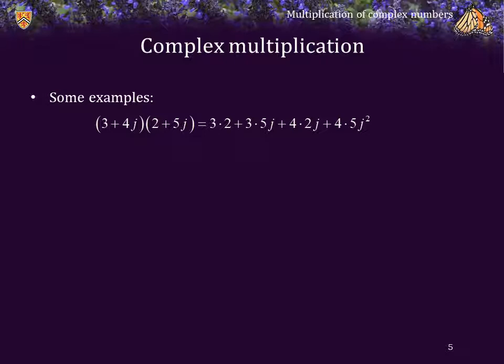Let's look at some examples. Here's 3 plus 4j times 2 plus 5j. Again: first, outside, inside, and last. Having calculated all of these, we replace j squared with negative 1 and collect the real and imaginary components, then we simplify.